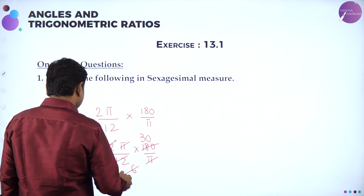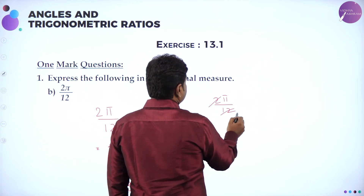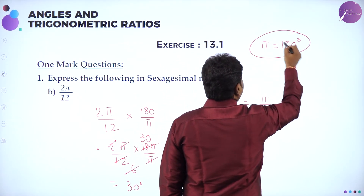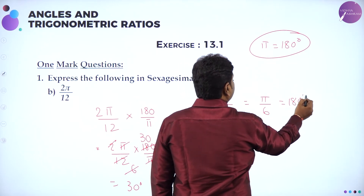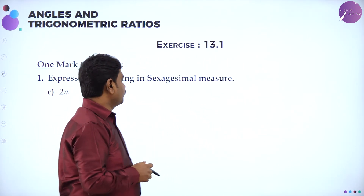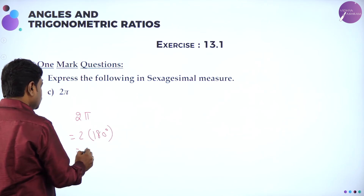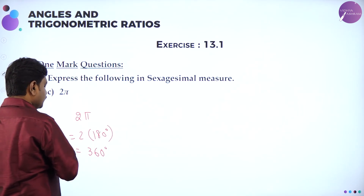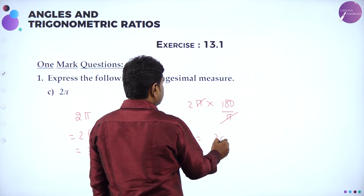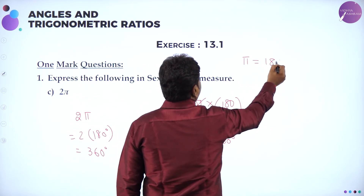Here is another simple technique: in the place of pi, substitute the value 180 degrees directly. So 2pi/12 simplifies to pi/6, and substituting pi = 180 degrees gives 180/6 = 30 degrees. Similarly, two pi equals 2 times 180 = 360 degrees. Either multiply 180/pi or substitute pi = 180 degrees — both give the same answer.